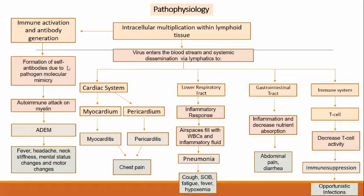Then, there will be a formation of self-antibodies due to pathogen molecular mimicry. Although the induction of this autoimmune response is poorly understood, molecular mimicry based on structural similarities between MV proteins and myelin has been suggested as a pathogenic mechanism. One of the neurologic implications known as ADEM, or acute disseminated encephalomyelitis, is immune-mediated, which can result in mental status changes and motor changes.